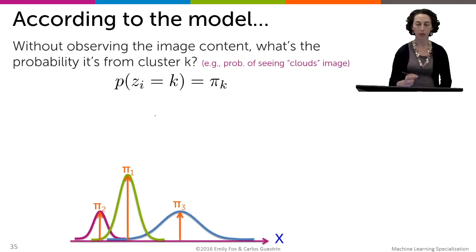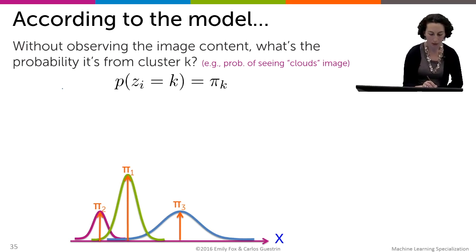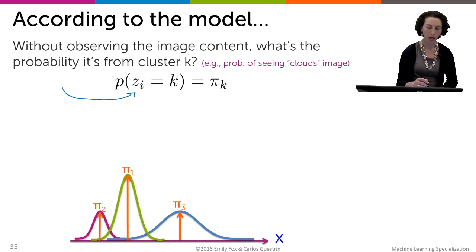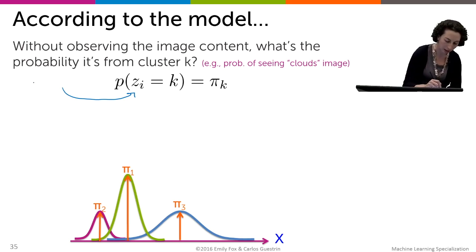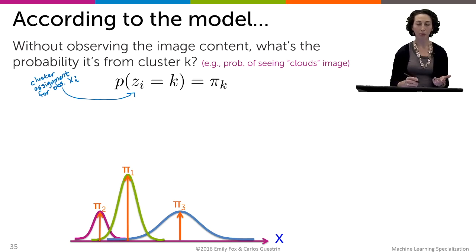When we're thinking about using mixture models to do clustering, note that they can also be used just to do what's called density estimation. But in our case, we're going to focus in on the clustering application. There, there's a really important other variable that we're going to introduce, and that is the cluster indicator, the assignment variable for every one of our observations. This is the cluster assignment for observation x_i. This is exactly the same variable that we had in k-means that was assigning observations to clusters, but in that case, just using the cluster center.